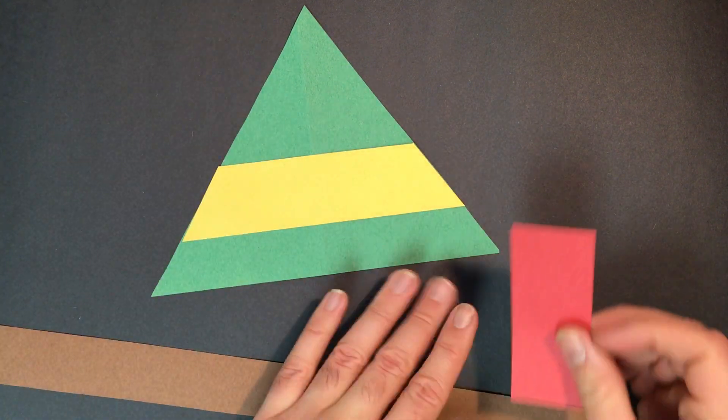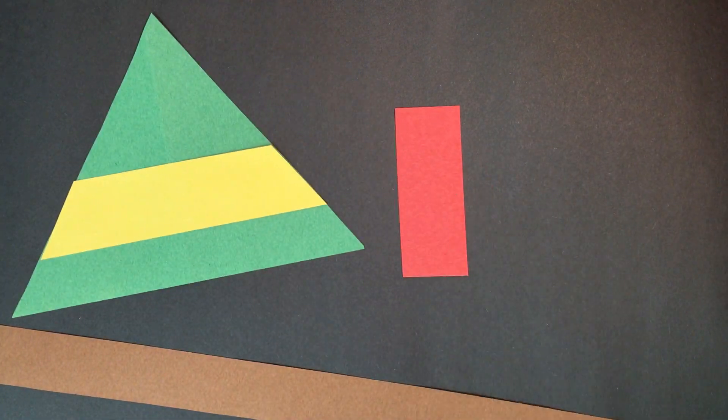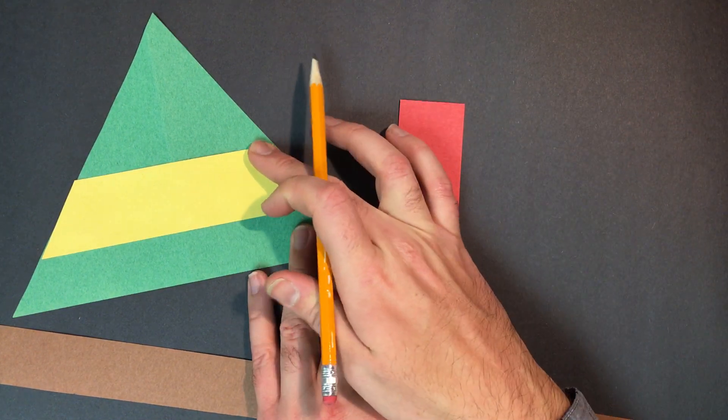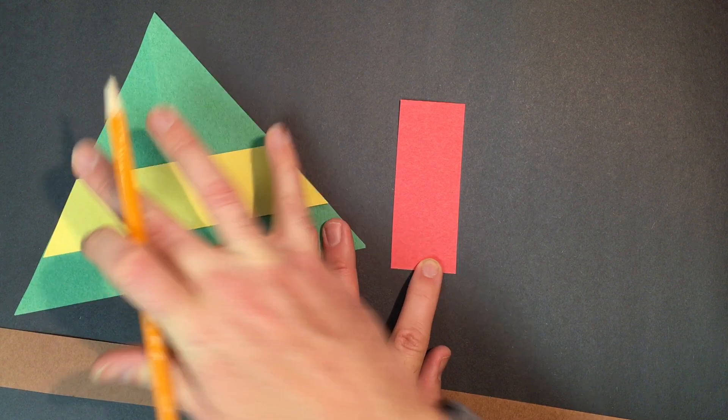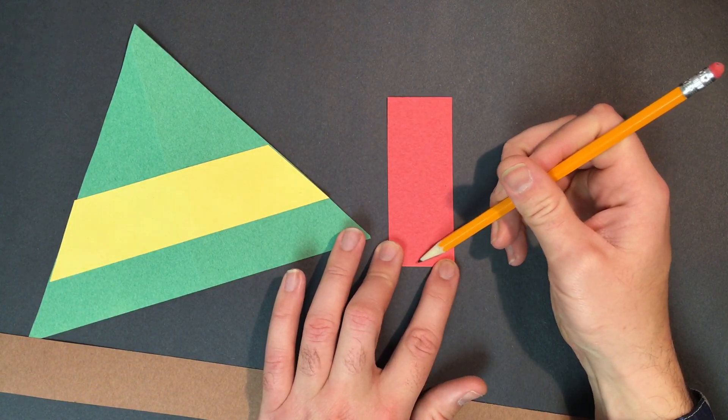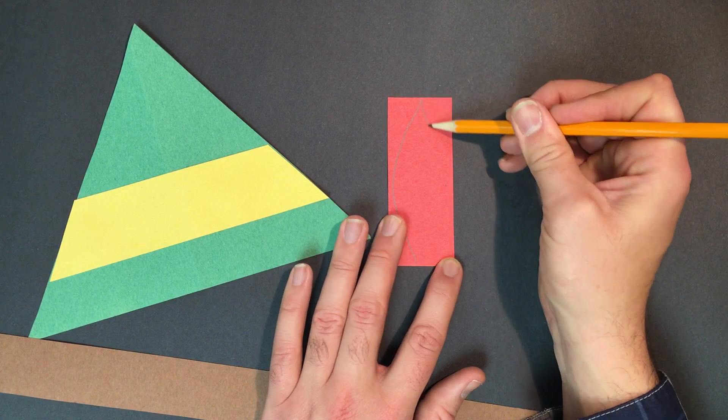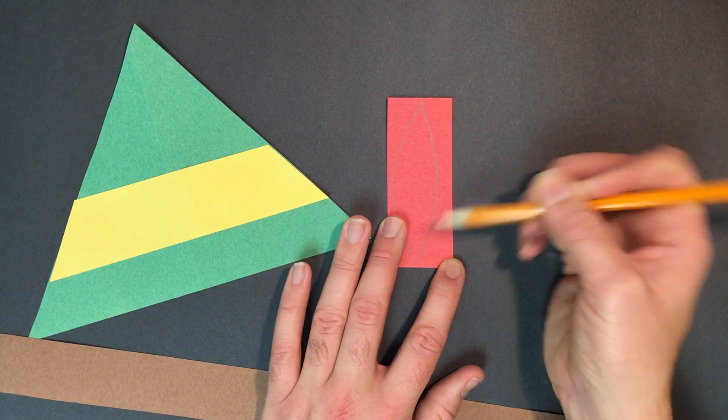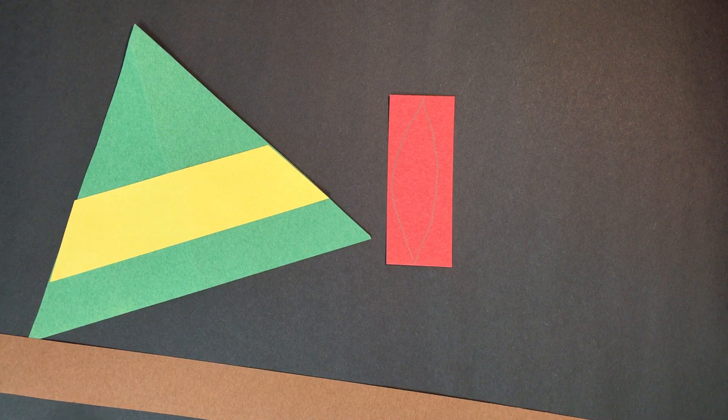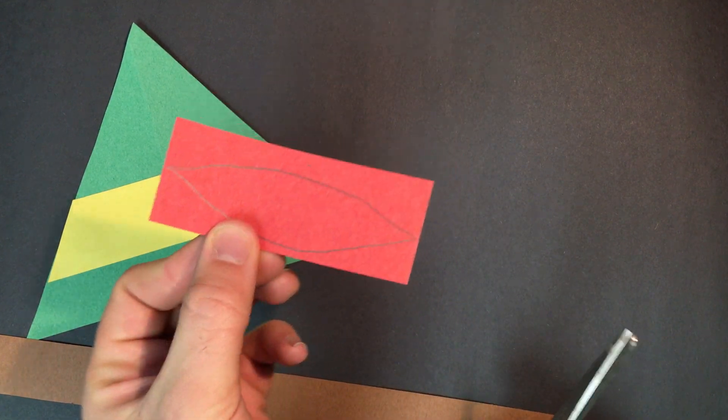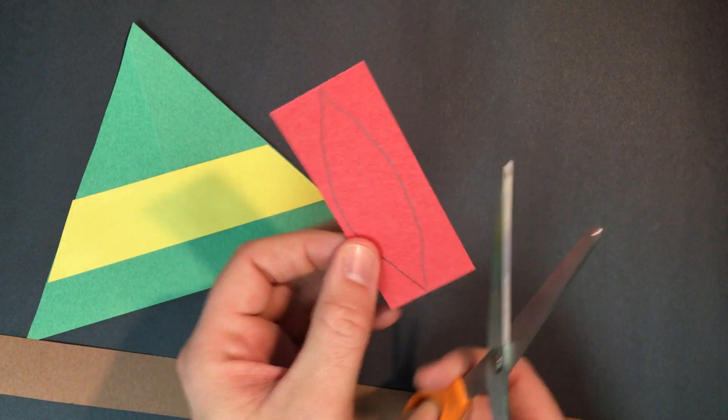Next part, we're gonna take this here. This is gonna be our red feather. It's the decoration part of our hat. And I want you to draw a nice elongated almond shape. Something that resembles a feather, kind of like that. Then we're gonna cut out that feather.